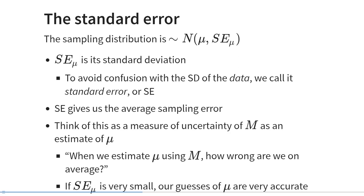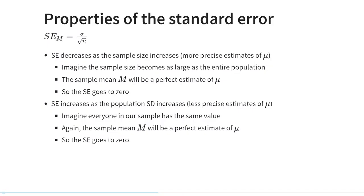The standard error gives us the average sampling error. So when we use m to estimate mu, the standard error tells us how wrong we are on average. If the standard error is very small, then our guesses about mu based on the sample mean m are very accurate. And if our standard error is very large, then our guesses are very poor. We can calculate the standard error by taking the population standard deviation sigma and dividing it by the square root of our sample size. So the standard error has two ingredients: the population standard deviation and the sample size.